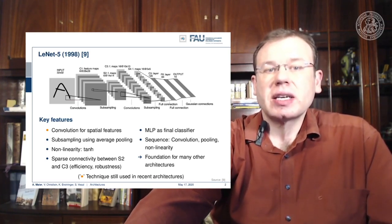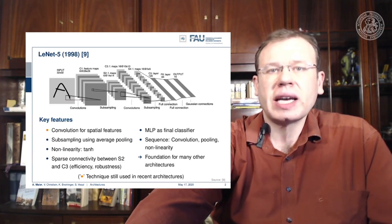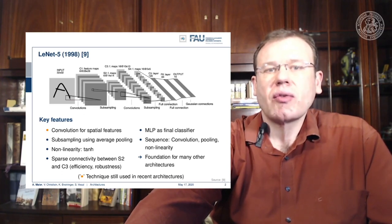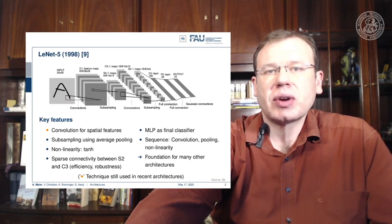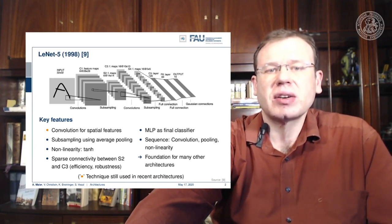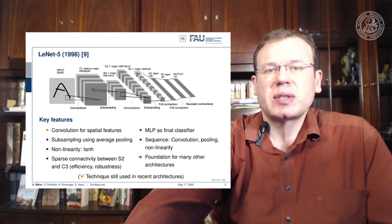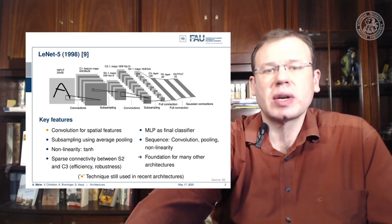For this architecture, the key features are listed, and you can see most of the bullets are in gray — meaning most features did not survive. What did survive is convolution for spatial features, which is still the main idea. Other things like subsampling using average pooling, the tanh non-linearity, sparse connectivity between S2 and C3 layers, and the multi-layer perceptron as final classifier are no longer common. The MLP classifier has been replaced by fully convolutional networks, which is a much better approach.